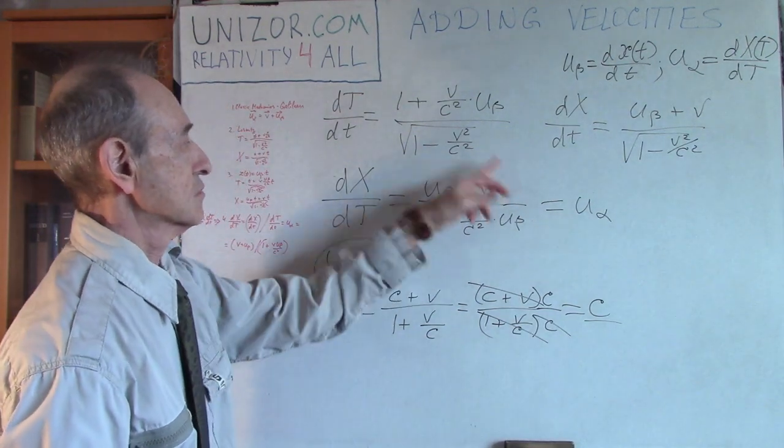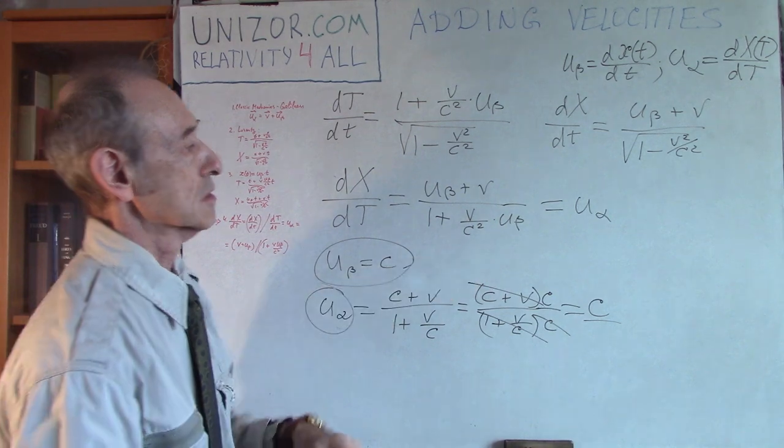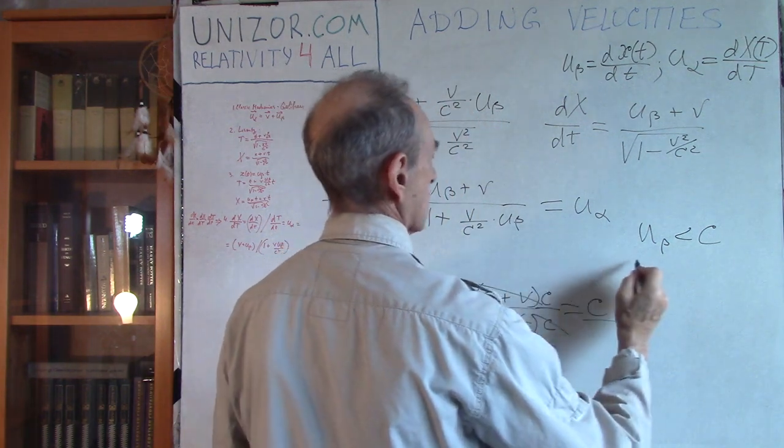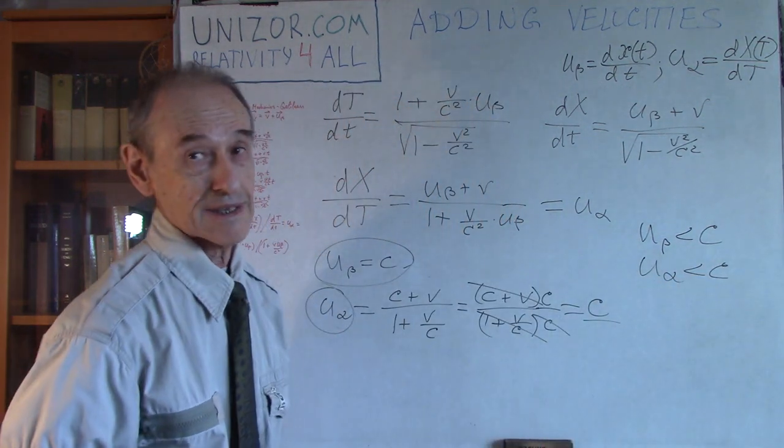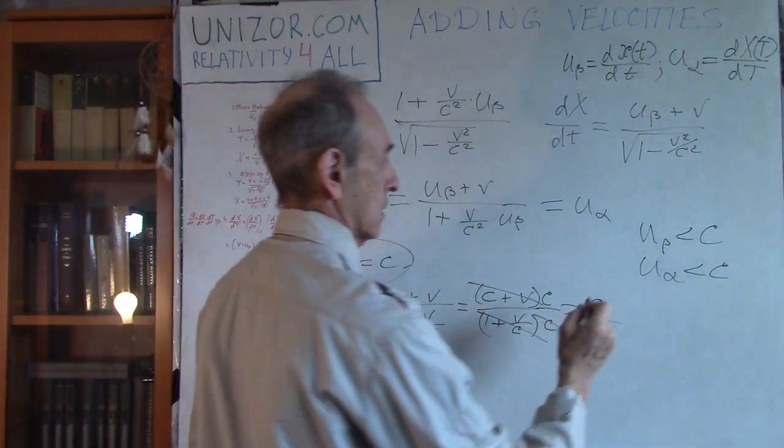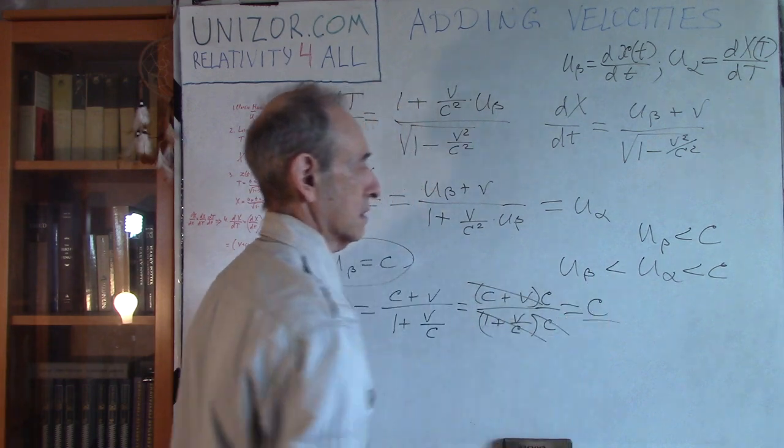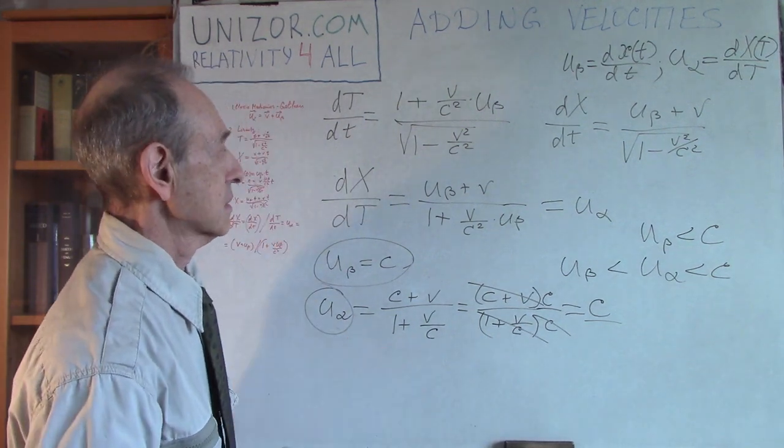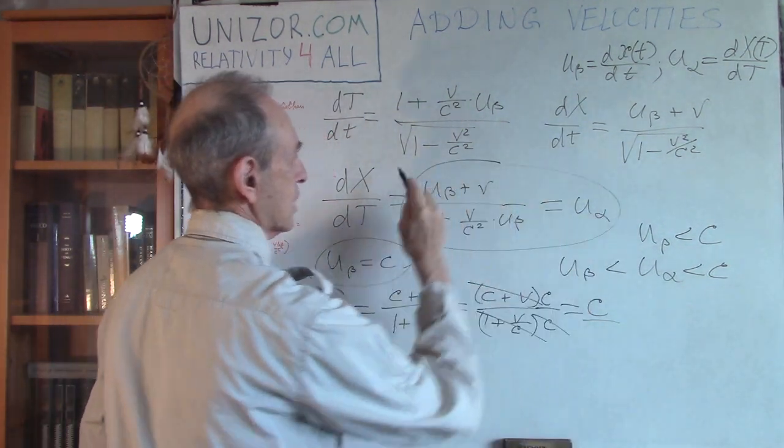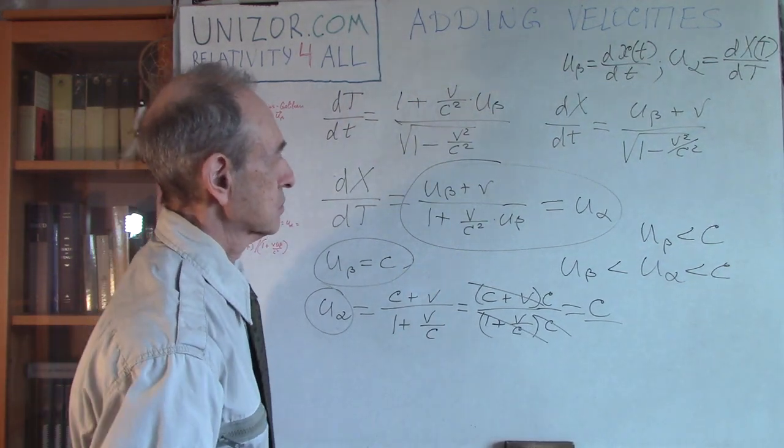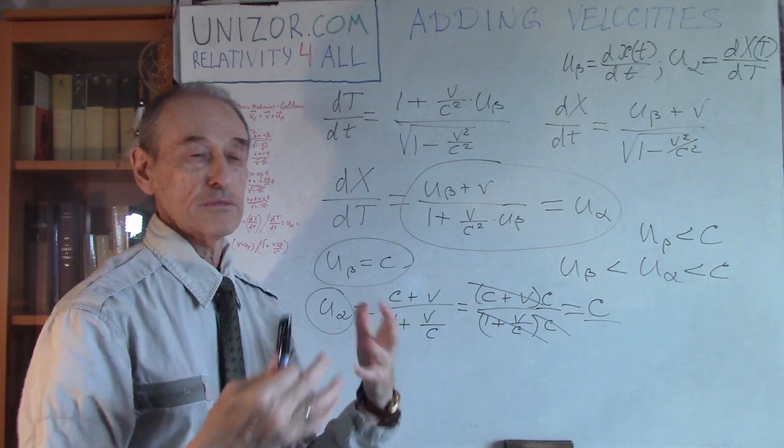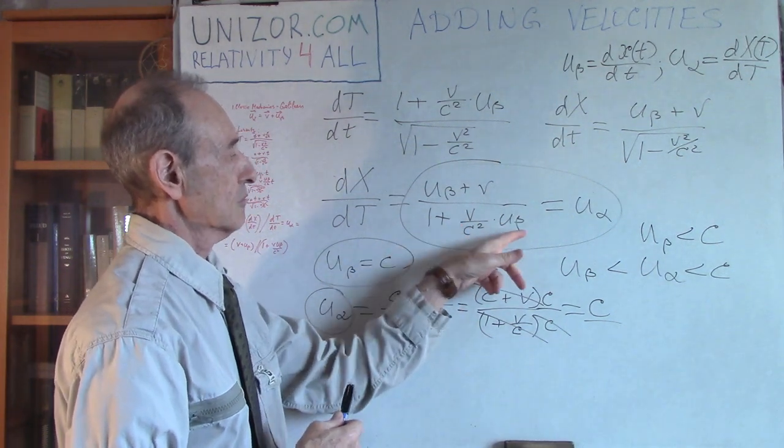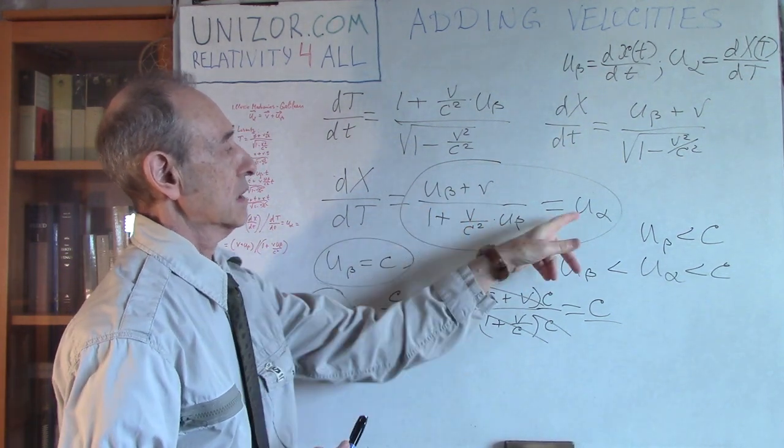As an exercise, you can make sure that if u_beta is less than speed of light, then u_alpha also should be less than speed of light, but greater than u_beta. You can check that these inequalities are actually held. That's the formula I was trying to present to you. This is how the speed of one object in one system is added with the speed of the whole system.